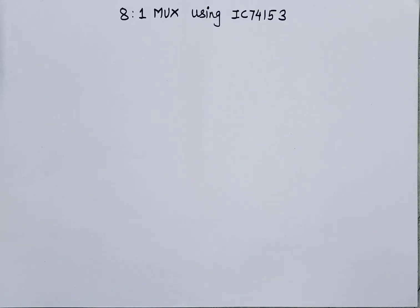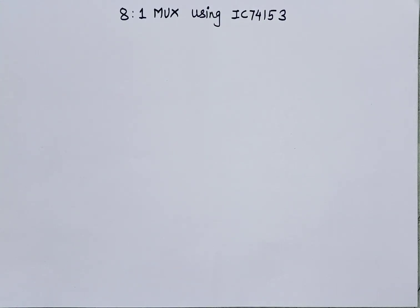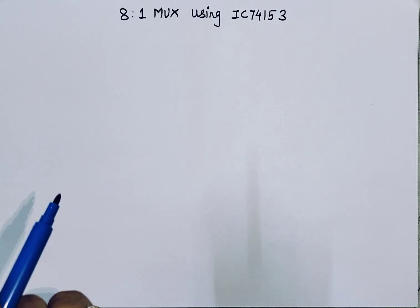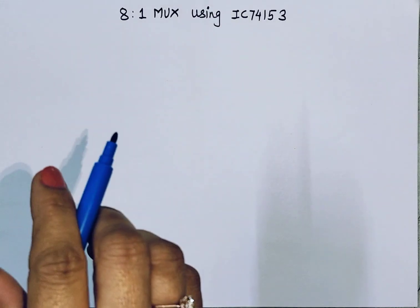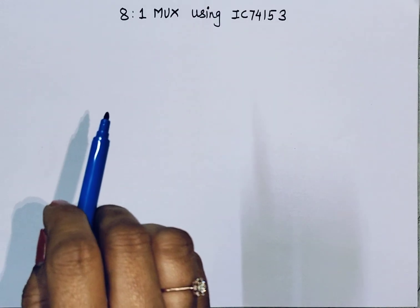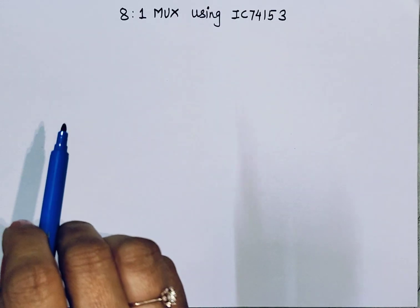Hello everybody, welcome to my channel Circuitry Simplified by Dr. Shobhanikam. In this video I'll tell you how to implement an 8-to-1 multiplexer using IC 74153. A multiplexer is basically a circuit which has multiple inputs and only one output. This is also called a data selector.